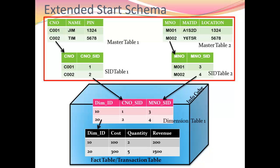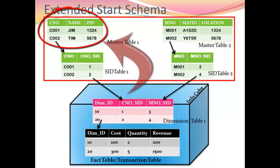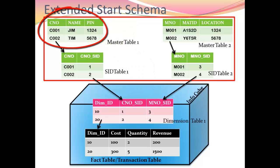First, the extended star schema has kept the master table outside the info cube, so now it can be used by multiple info cubes. The first disadvantage is overcome.